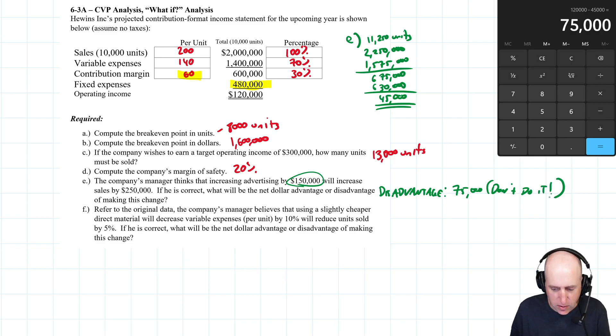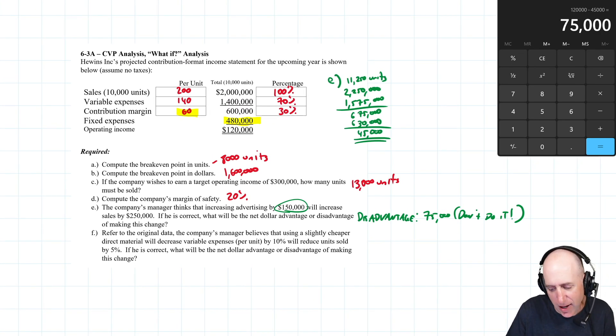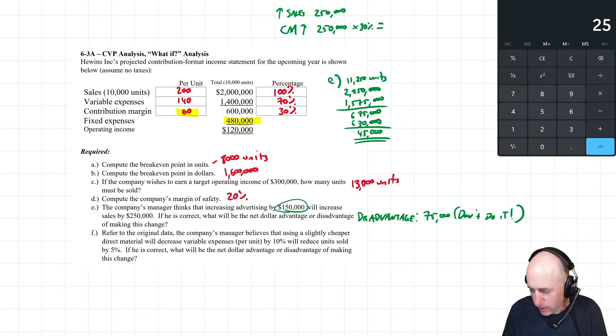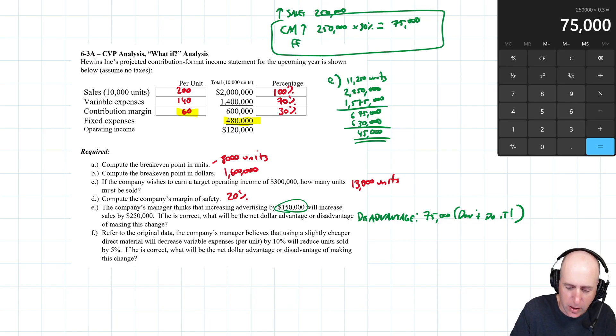I said there's a shorter way to do this. I would do the income statement, that's the way my brain operates, but you could do it much more simply. You could go: if sales go up by 250, CM is going to go up by 250 times the CM ratio, times that 30%. So 250 times 0.3, CM goes up by 75,000. And if CM goes up by 75,000 and at the same time fixed expenses go up by 150, you can see contribution margin is good, fixed expenses is bad. The bad outweighs the good by 75,000.